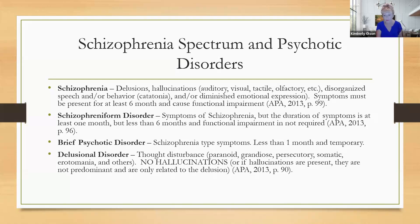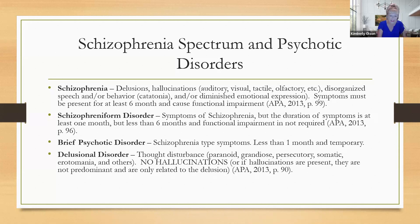Catatonia is also part of behavior — there are people who can put their bodies into really bizarre positions and hold them for hours, like that waxy flexibility. And there can also be diminished emotional expression, so it's not uncommon for somebody with schizophrenia to seem flat. The general public tends to think of them as loud and dangerous, and certainly some people with paranoid schizophrenia are out there talking to themselves, but most people with schizophrenia kind of keep to themselves. Symptoms must be present for at least six months and cause functional impairment.